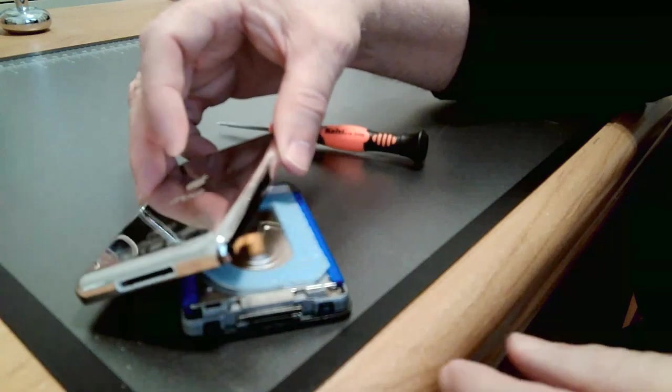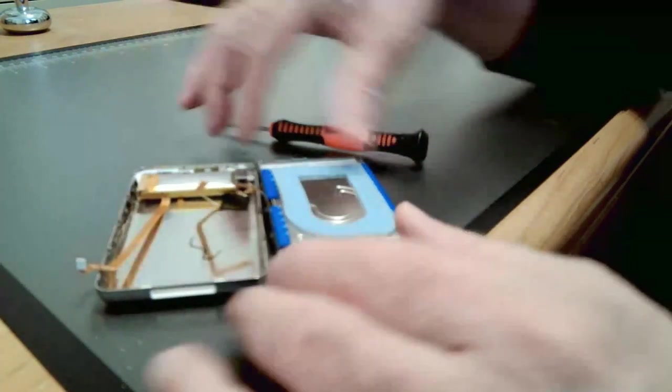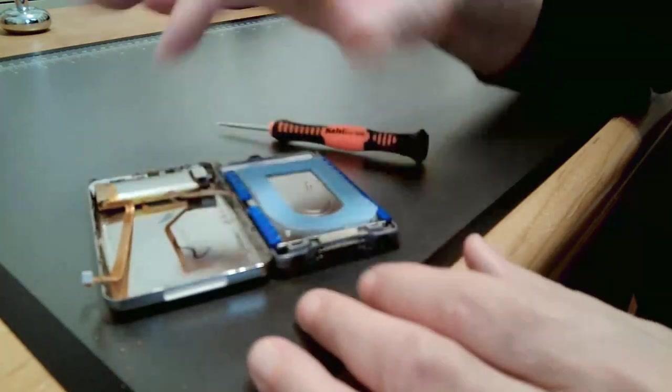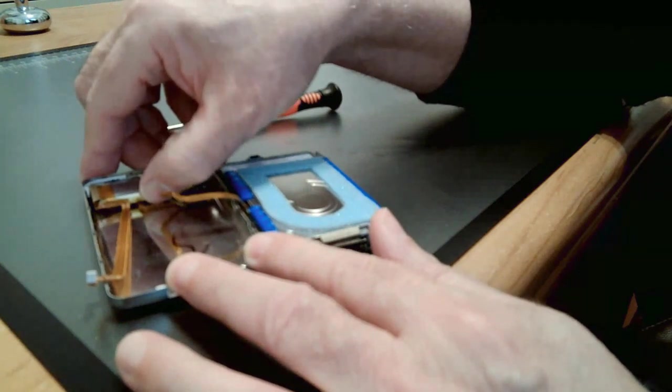So that disconnects the battery there, and that's where it connects. And that gives us some freedom of movement here to lay this backside flat. And then the next step will be to actually just remove this battery.